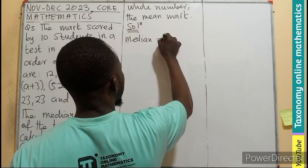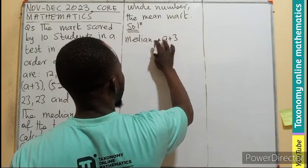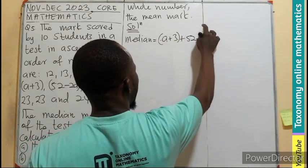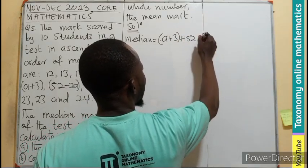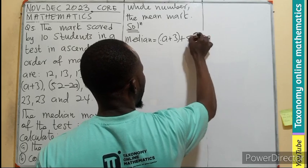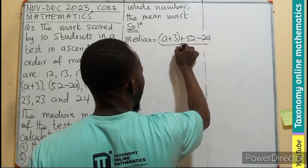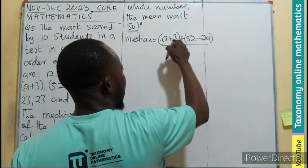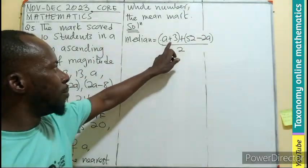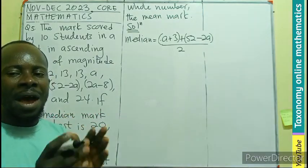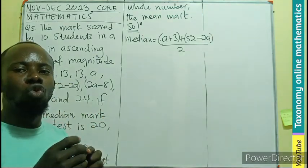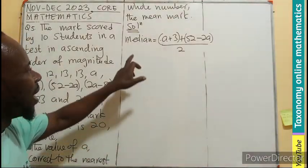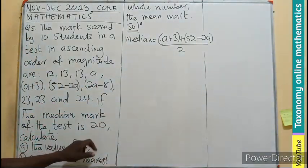So it is going to be A plus 3, plus 52 minus 2A, all divided by 2. So this is one, and this is another. So the middle terms, you add them. The arithmetic mean of the two middle terms gives us the median. And the median has been given as 20.